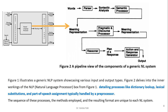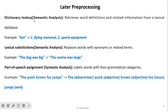Now we will see the lateral pre-processing. These are not required for all applications but are required for specific ones, and they generally happen inside the natural language processor block. Dictionary lookup, required in semantic analysis, retrieves word definitions and their senses from a lexical database — for example, whether 'bat' is a flying mammal or a sports equipment. Lexical substitution in semantic analysis replaces words with synonyms; for example, 'the dog was big' becomes 'the canine was large'. Part-of-speech tagging in syntactic analysis labels words with their grammatical categories — for example, in 'the quick brown fox jumps': 'the' is a determiner, 'quick' and 'brown' are adjectives, 'fox' is a noun, and 'jumps' is a verb.